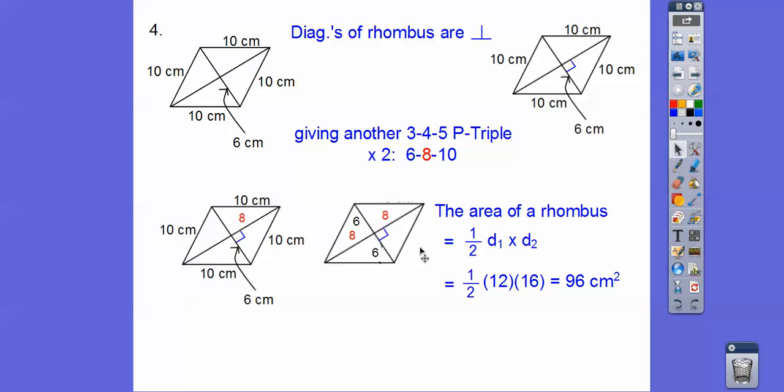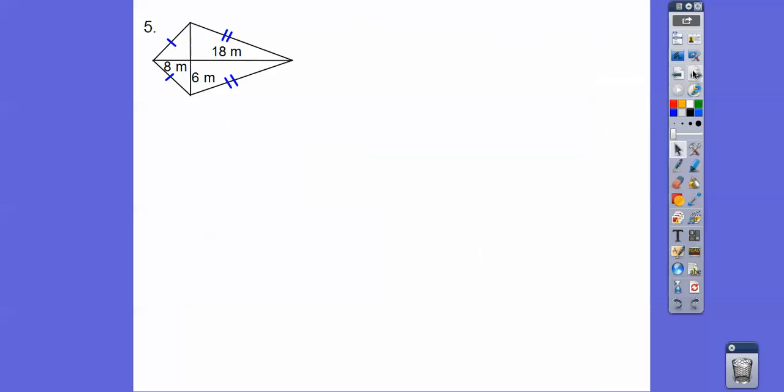And the area of a rhombus is this. We don't need those 10s anymore. It's one half the product of this diagonal, which is 16, times this diagonal, which is 12. And I get 96 centimeters squared.